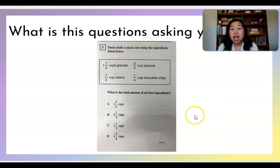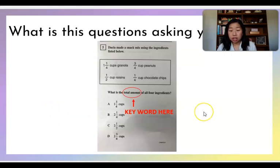Next example, Dacia made a snack mix using the ingredients listed below. She's using one and a quarter cups of granola, three quarter cups of peanuts, half cup of raisins, and a quarter cup of chocolate chips. What is the total amount of all four ingredients? So again, keyword here, total amount. So we're going to go back to, if we know that the keyword is total, what is it asking me to do? Am I going to add, subtract, multiply, divide? And we can talk about what that means.